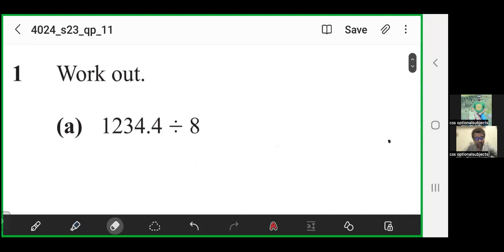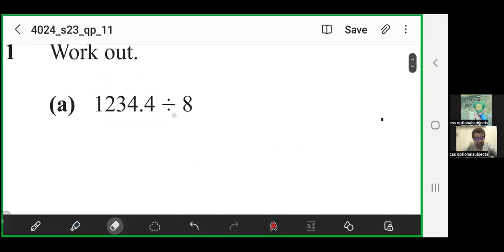Work out 1234.4 divided by 8. Now this is a decimal number in the numerator and we don't have a calculator. So just write this like this: 1234.4 divided by 8.